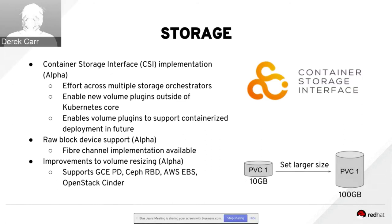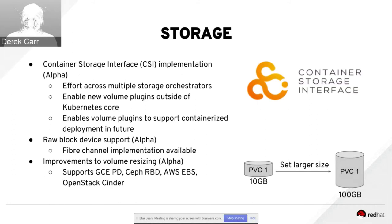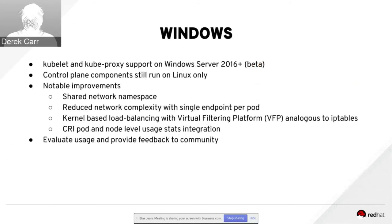Finally in SIG Storage, the volume resize support we talked about in Kubernetes 1.8 has been extended to additional volume types. New in Kubernetes 1.9, you can resize GCE Persistent Disks, CephFS disks, AWS EBS volumes, and Cinder-backed persistent volumes. Based on the growing experience across multiple storage volume types, volume resizing is being set up to graduate to beta in a future release.